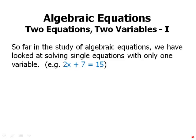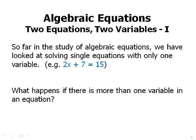Two equations with two variables. So far, in the study of algebraic equations, we have looked at solving single equations with only one variable. For example, something like 2x plus 7 equals 15. What happens if there is more than one variable in an equation?